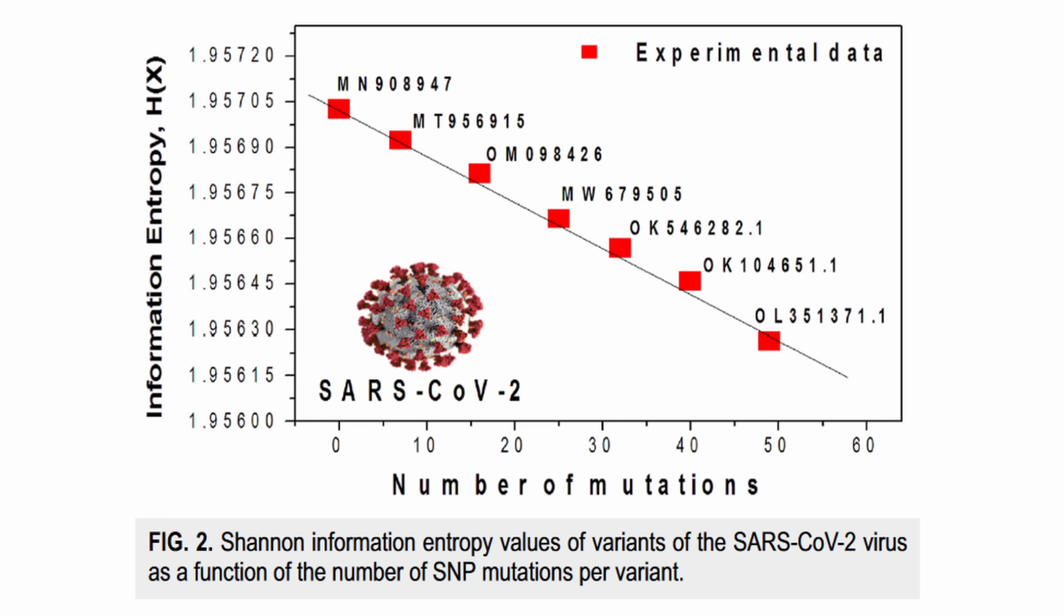These findings suggest a potential governing mechanism behind genetic mutations. This challenges the conventional notion that genetic mutations are entirely random events, thus opening the possibility of developing predictive algorithms for genetic mutations before their occurrence, in stark contrast to their classical Darwinian view.